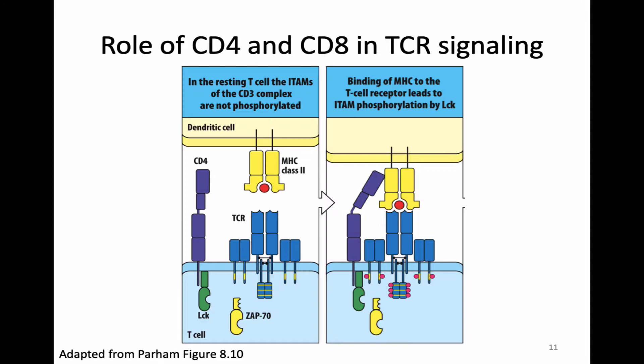These details will become important as we talk about T cell receptor development in terms of rearrangement and how T cells differentiate, because T cells will need CD4, CD8, and CD3 in order to get a signal during their T cell development process. That's why I have to tell you about this part of signaling right now.